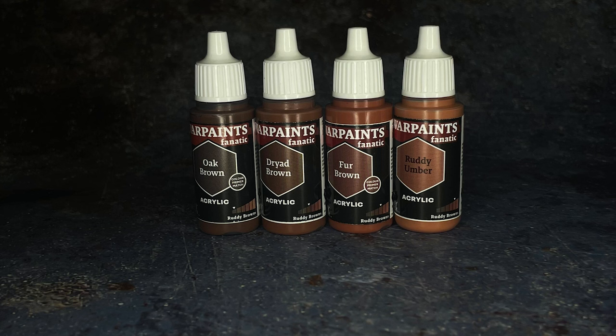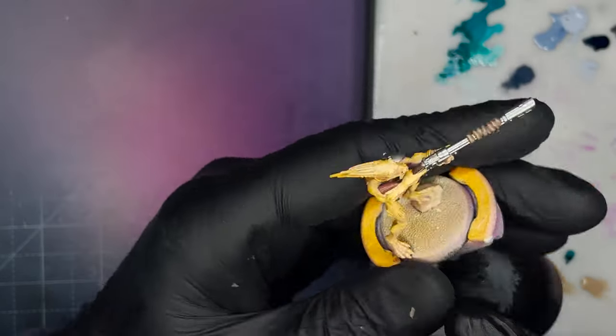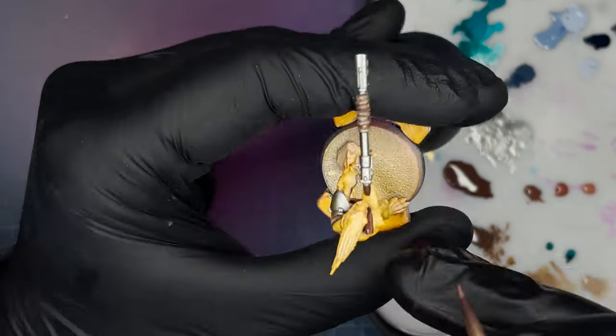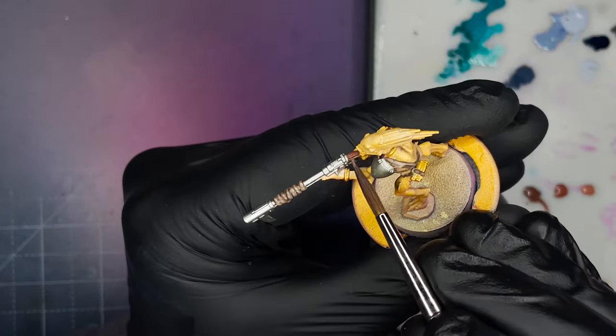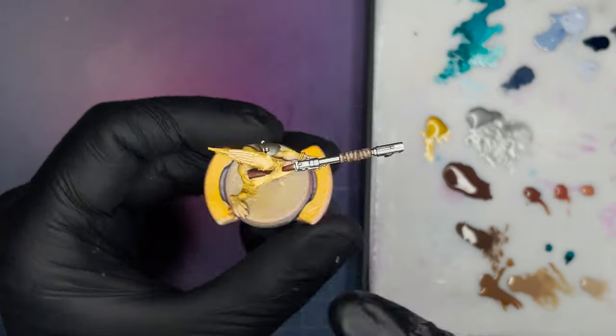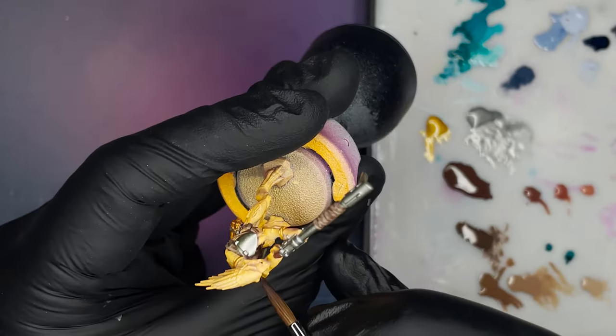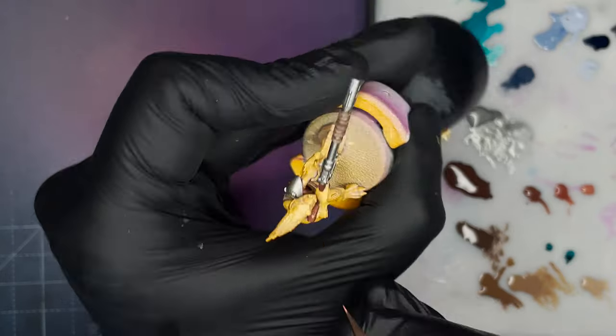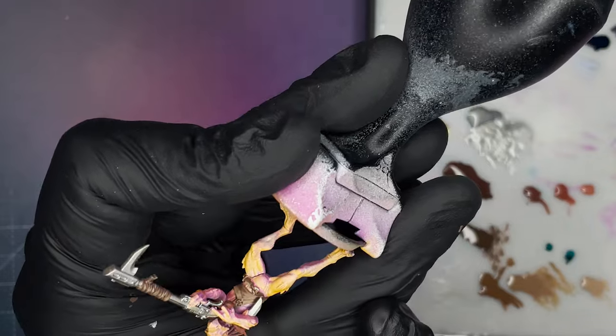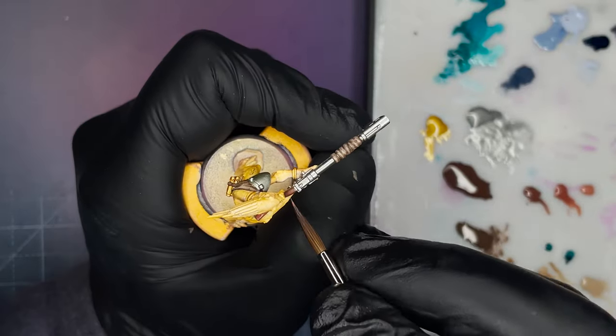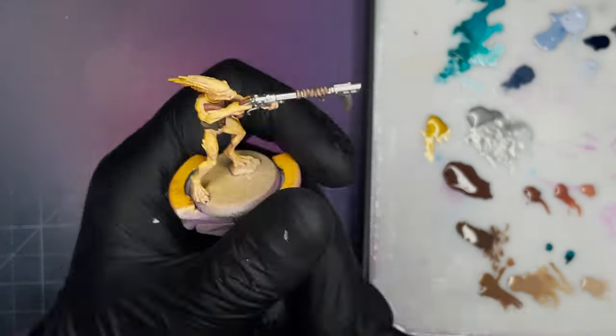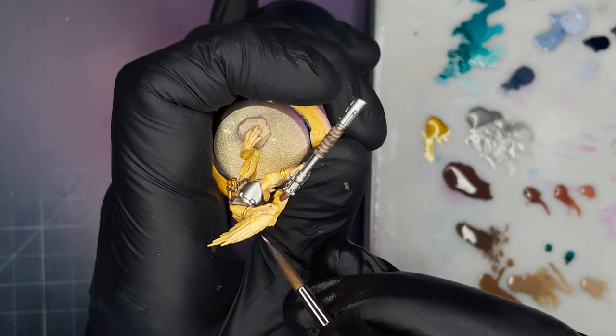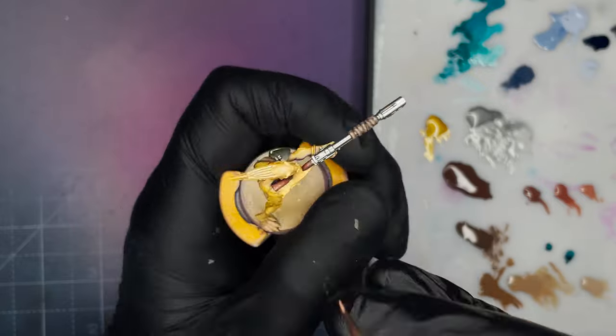For the stock of the gun I used the Army Painter Ruddy Brown triad. This is a nice reddish brown that should look good on the stock of the gun. I'm just following the same process here - using the darkest color in the triad to base coat and then working my way up to lighter colors, covering a smaller surface area and finishing up on the lightest color again. I'm not using any water or mediums here, however I am using a wet palette so that does add a little bit of moisture to the paint. If you're not using a wet palette you might want to thin down the paint a little bit with water.